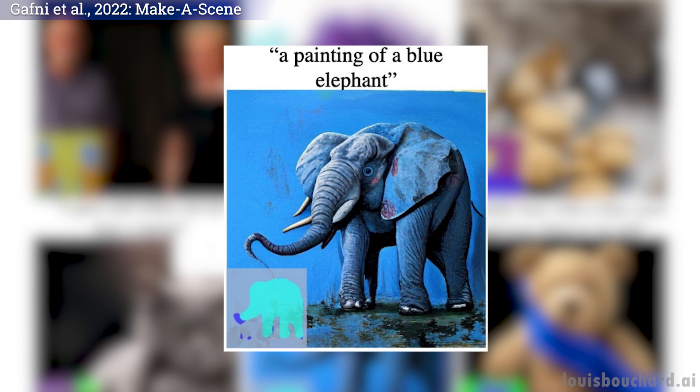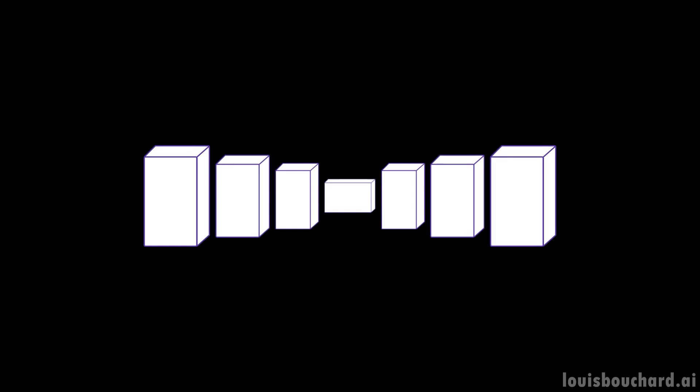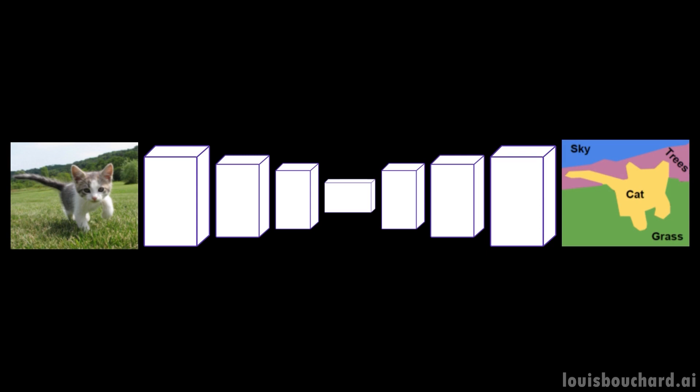Here, during training, instead of only relying on the caption, generating the first version of the image and comparing it to the actual image, and repeating this process numerous times with all our images, we will also feed it a sketch. What's cool is that the sketches are quite easy to produce for training — simply take a pre-trained network you can download online and perform instant segmentation. They use a free pre-trained VGG model on ImageNet, a quite small network compared to those today, super accurate and fast, producing results like this, called a segmentation map.